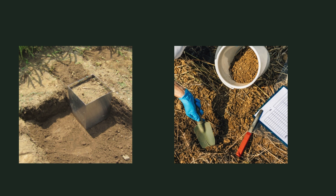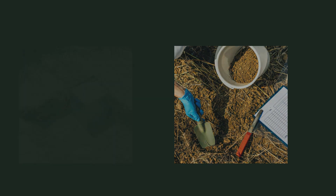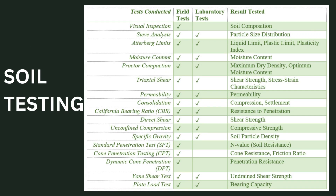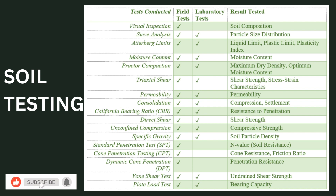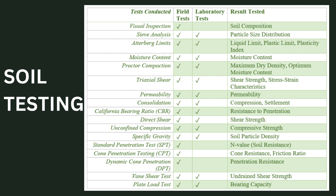Once we have collected the samples in the semi-direct method, we conduct soil testing. There are numerous tests that can be conducted on the soil once the sample is collected. Some of them are categorized in the table shown, including visual inspection, sieve analysis, Atterberg limits test, moisture content test, Proctor compaction test, standard penetration test, dynamic cone penetration test, and vane shear test. These are the list of tests that can be conducted on the soil during soil exploration.